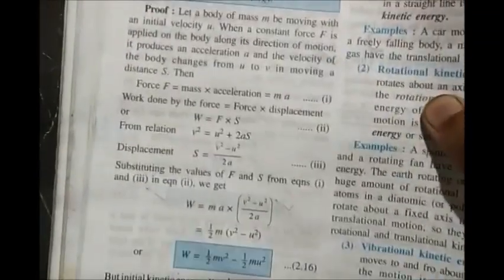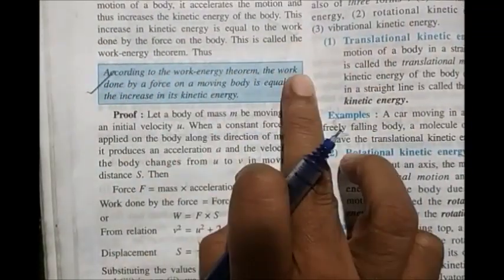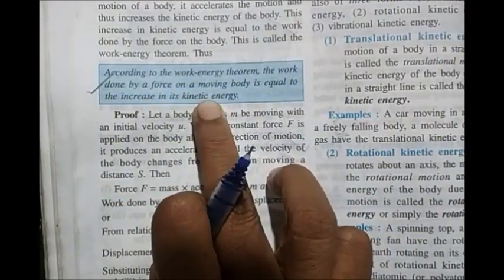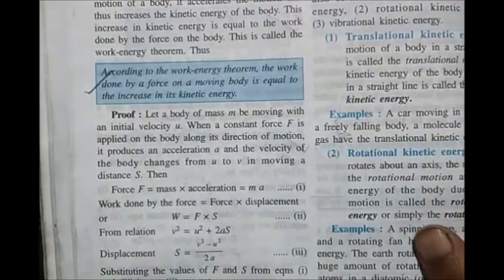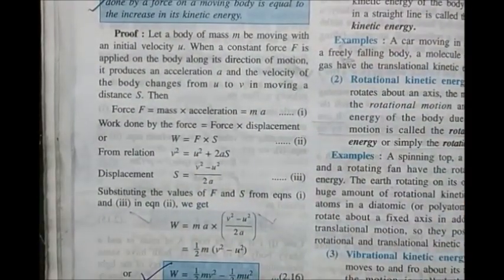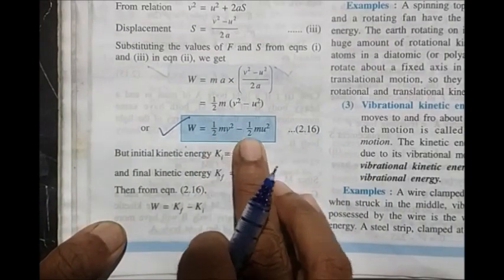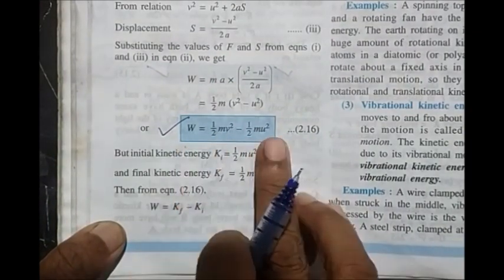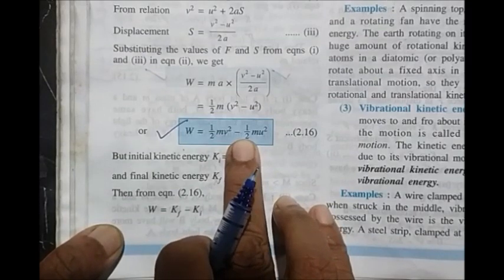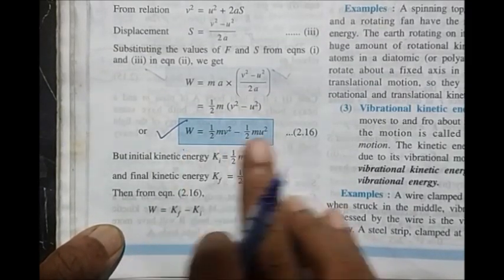Work-energy theorem: work done by a force on a moving body equals the increase in its kinetic energy. So work done = ½mv² - ½mu², where v is final velocity and u is initial velocity.